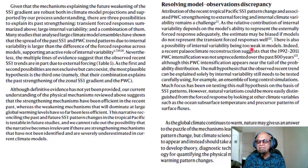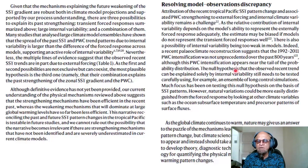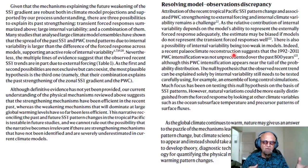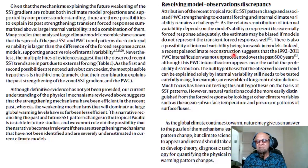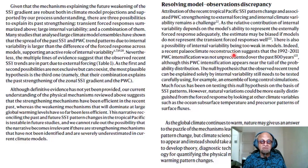Estimates may be biased if models do not represent transient forced responses well — as greenhouse gases increase in the real world, the model has to keep responding to radiative forcing. There is also the possibility that internal variability is too weak in the models — not enough amplitude of El Niño events, not enough monsoon variability. Models produce El Niño, Monsoon, NAO, PDO, everything, but everything will be slightly different from observations. Observations themselves also have deficiencies — they are not long enough.